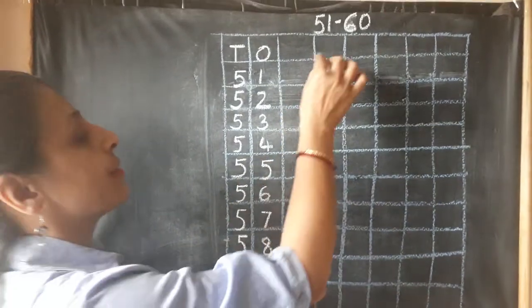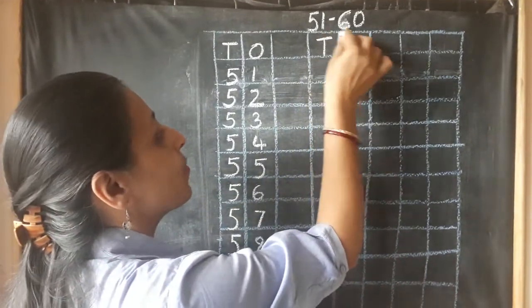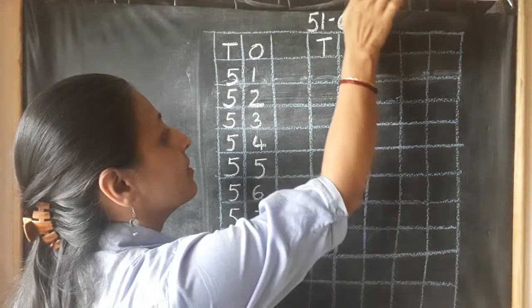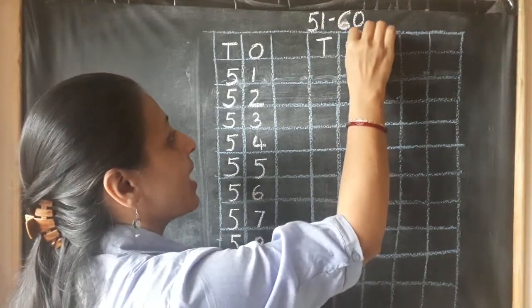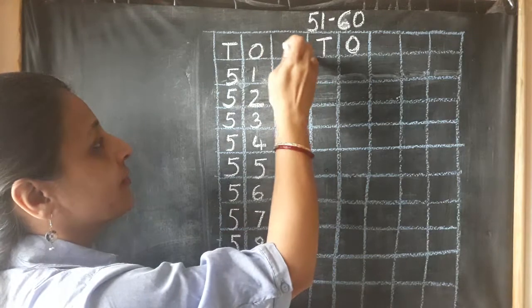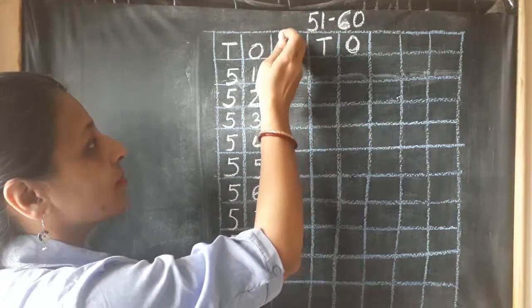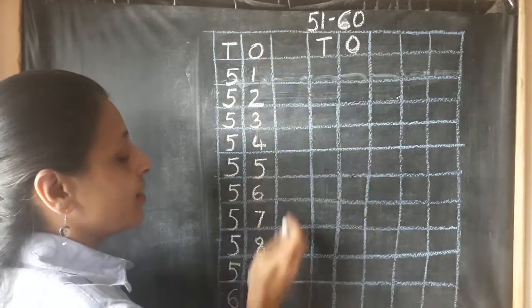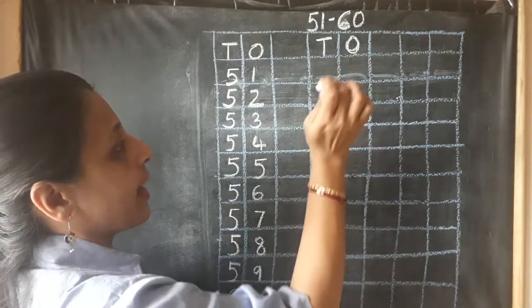The same way we are going to write once again 51 to 60. Every time, whenever we write, we have to leave one box, one column and then we will write. Okay?